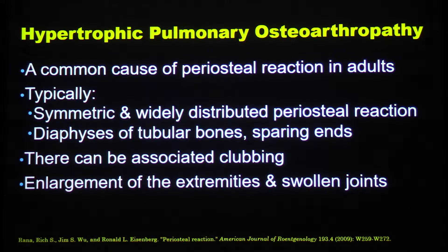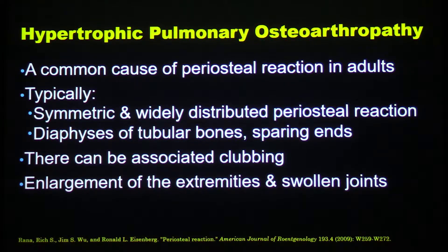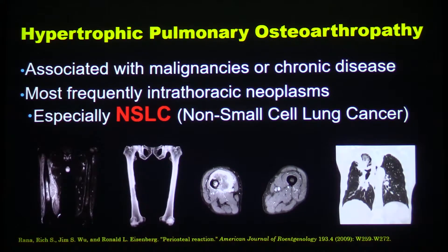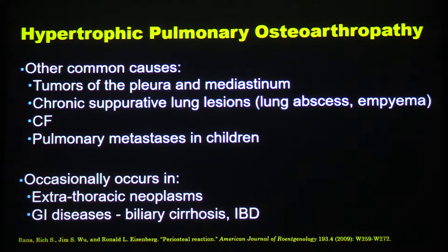It's usually symmetric and widely distributed. Here it's not symmetric because we have the soft tissue lesion on the other side creating an aggressive reaction, but you saw how wide it is on the left side. There can also be associated clubbing, enlargement of extremities, and swollen joints. It's specifically linked to non-small cell lung cancer, which was the case here. Other common causes are tumors of the mediastinum, CF, pulmonary metastasis in children, and occasionally GI diseases.